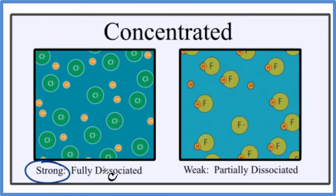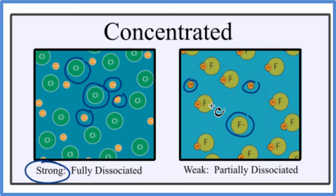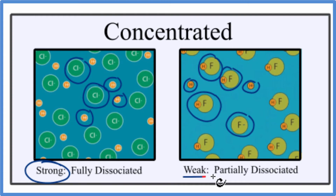A strong acid, like HCl right here — you can see all the H+ and Cl- ions. All of these are ions, so the HCl dissociated completely in water, and that's what makes it a strong acid. Something like HF over here only dissociates partially in water, and that's what makes it weak. You can see there are a few hydrogen ions by themselves and a fluoride ion, but most everything is still bonded together. So a weak acid is only partially dissociated.